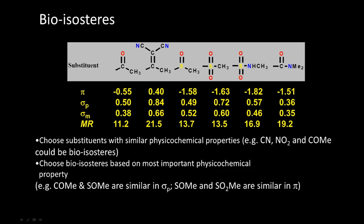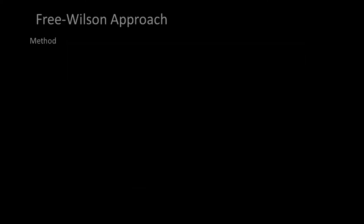Choose bioisosteres based on the most important physicochemical property. Is the electronic feature very important, or the hydrophobic, or the molecular refractivity (volume and density, i.e., size)? For example, SOME and SO2ME are similar in sigma-p (para substitution); their hydrophobicity (phi) can be seen here. Depending on which physicochemical property you think is important, we can select. Bioisosteres can be very useful when synthesizing new molecules with different substitutions.